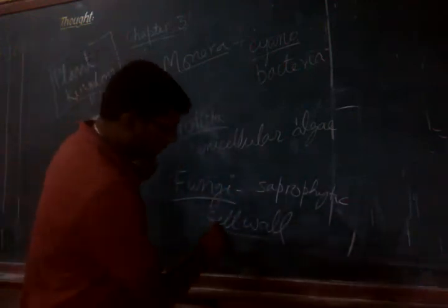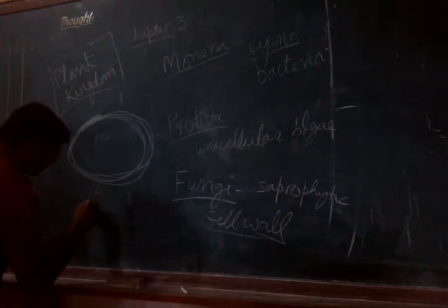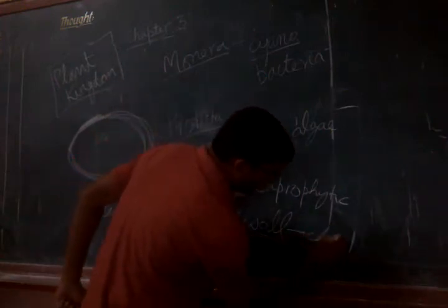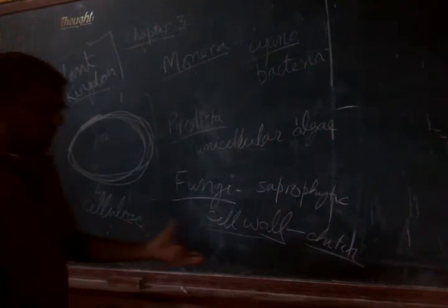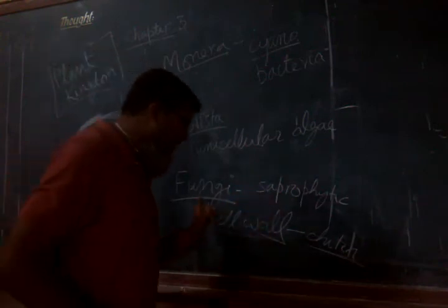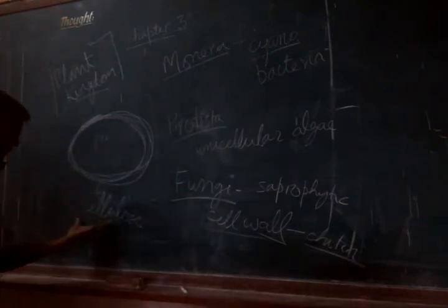Let me tell you that the cell wall in plants is made up of cellulose, while in kingdom Fungi the cell wall is made up of a material called chitin. Cellulose is a polysaccharide and chitin is also a polysaccharide, but these two are different kinds of polysaccharides. Fungi have a cell wall made up of chitin polysaccharide, while plants have a cell wall primarily made up of cellulose polysaccharide.